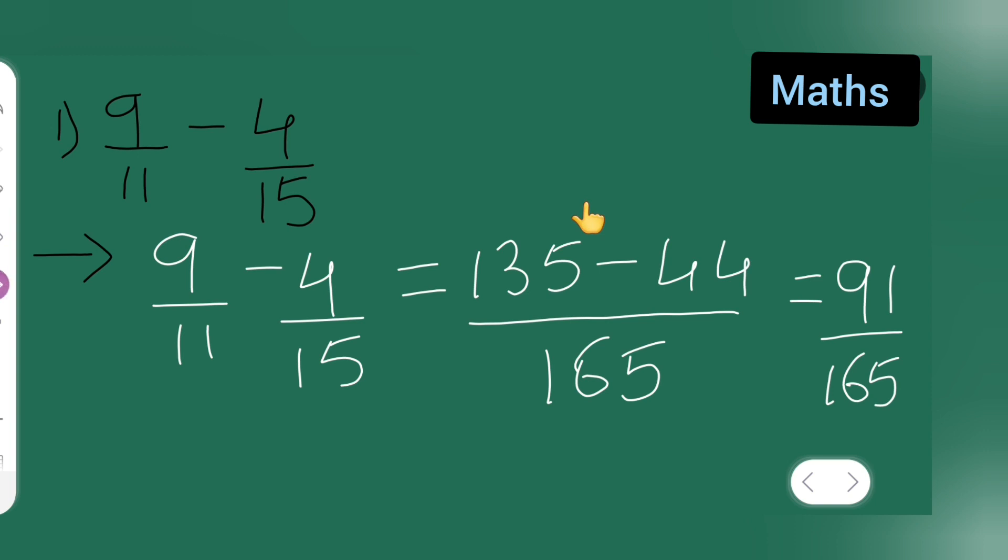So basically what I have done over here is 9 15s are 135 minus 4 11s are 44 upon 11 multiplied by 15 is 165. Which is equal to, subtract this, 135 minus 44 will be 91. So denominator will be same for both, so it will be upon 165.